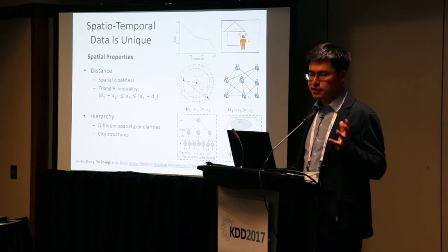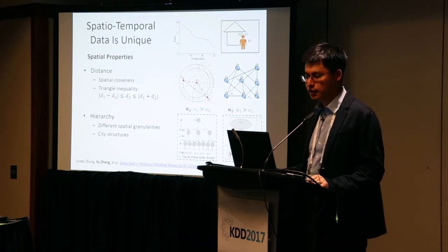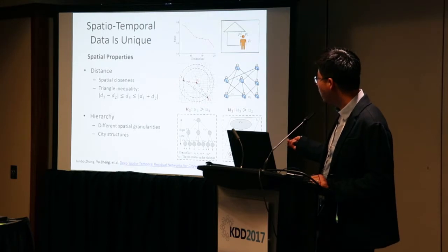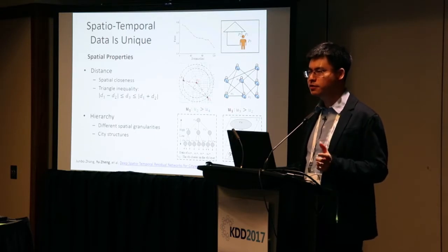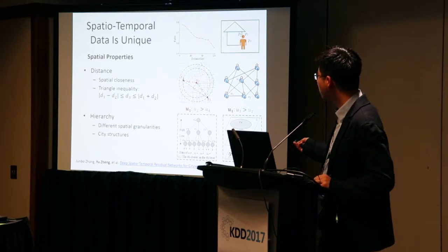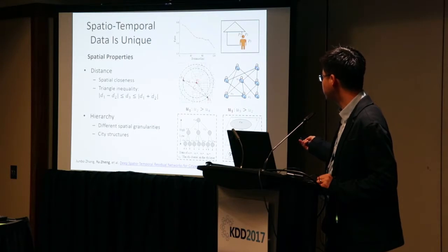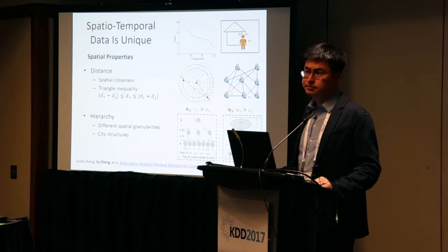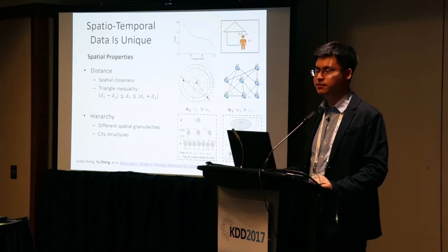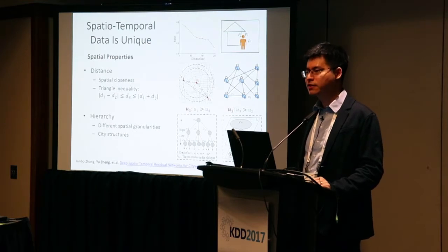Spatial-temporal data is unique because it has both spatial and temporal properties. The spatial property is comprised of spatial distance and spatial hierarchy. According to the first law of geography, near things are more related than distant ones — as the distance between two locations increases, the similarity of their readings decreases almost linearly. This is very different from image data, where pixel distance is not as semantically meaningful as geographic distance.